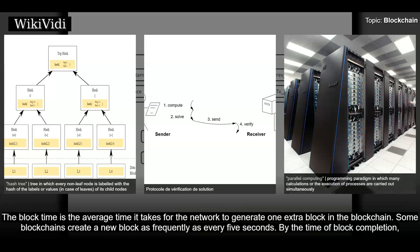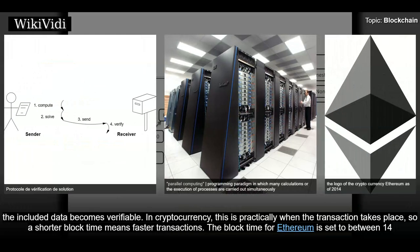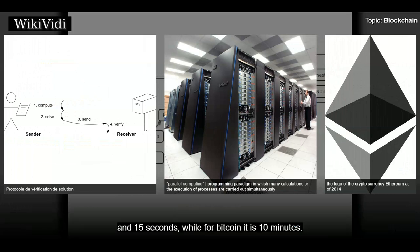The block time is the average time it takes for the network to generate one extra block in the blockchain. Some blockchains create a new block as frequently as every 5 seconds. By the time of block completion, the included data becomes verifiable. In cryptocurrency, this is practically when the transaction takes place, so a shorter block time means faster transactions. The block time for Ethereum is set to between 14 and 15 seconds, while for Bitcoin it is 10 minutes.